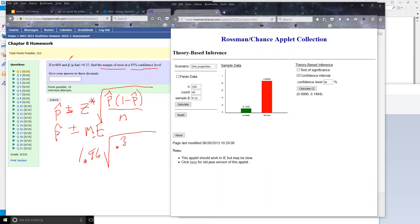So 0.35, and then 1 minus 0.35 is 0.65, all over the size of your sample, which is 600, and then if I crunch it out on my calculator.